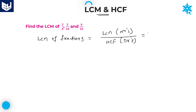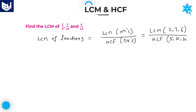Here, the numerator values are 2, 3, and 6. And in the denominator, we have HCF of denominators. What are the denominators mentioned in the problem? 5, 10, 25. All these numerator numbers are small numbers, so you can directly calculate the LCM.